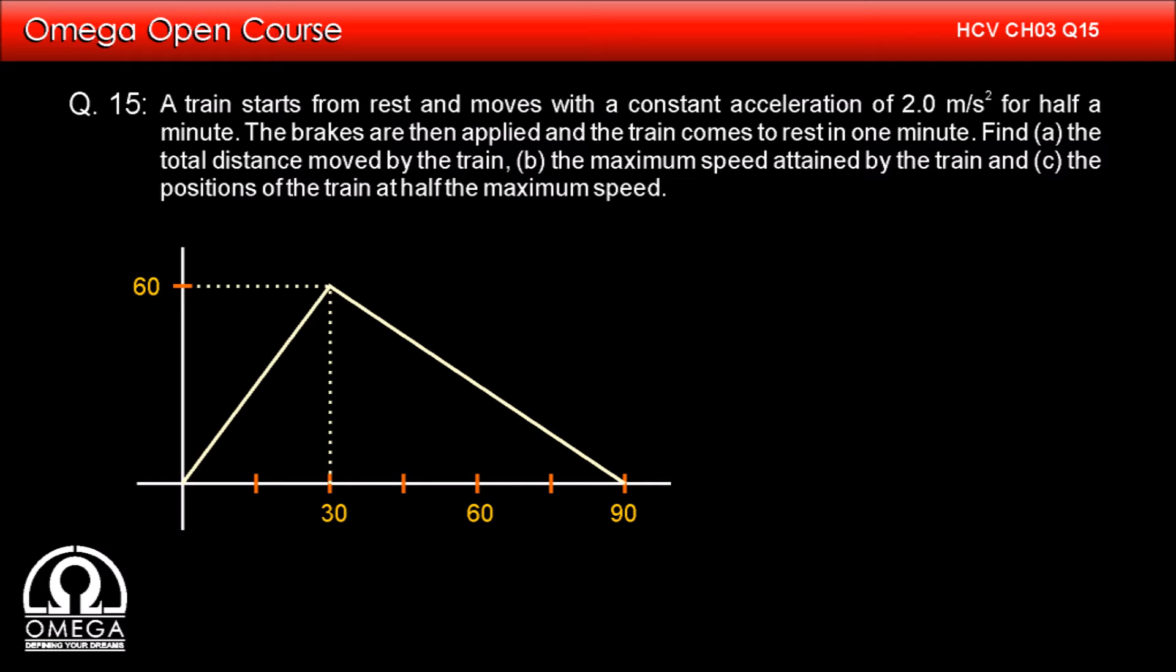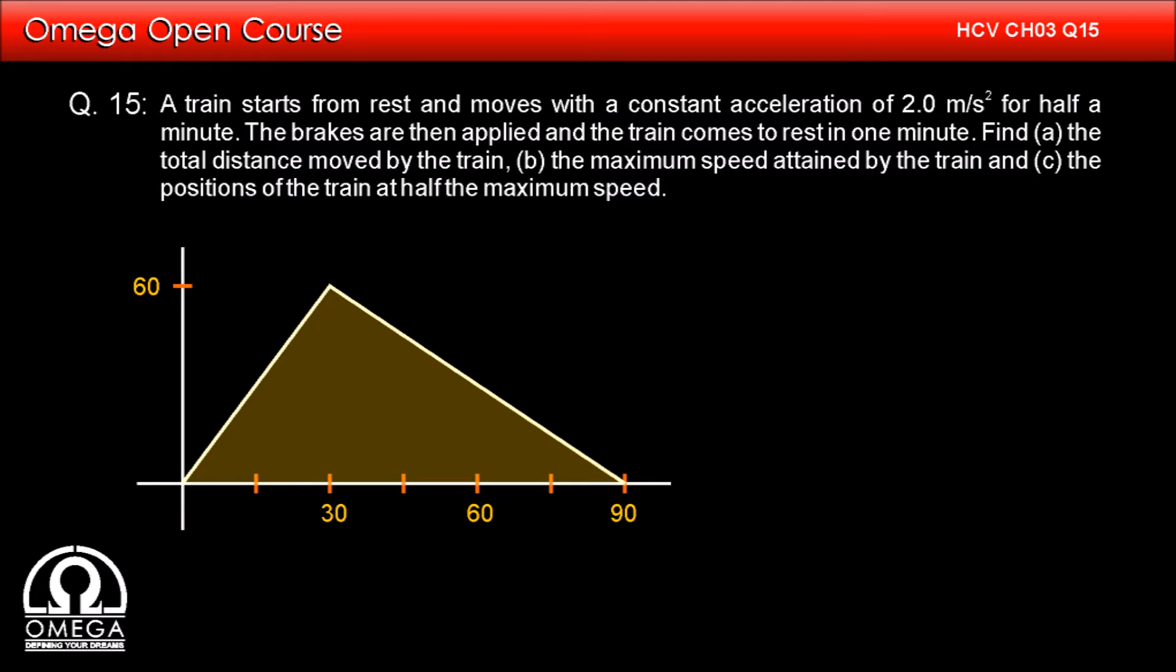Now we know that the displacement is the area of the velocity-time graph. Therefore the total distance travelled by the train is equal to the area of the shaded region. Area of a triangle is half × base × height, i.e. 45 × 60, i.e. 2700 meters, i.e. 2.7 kilometers. This is answer to part A of the question.